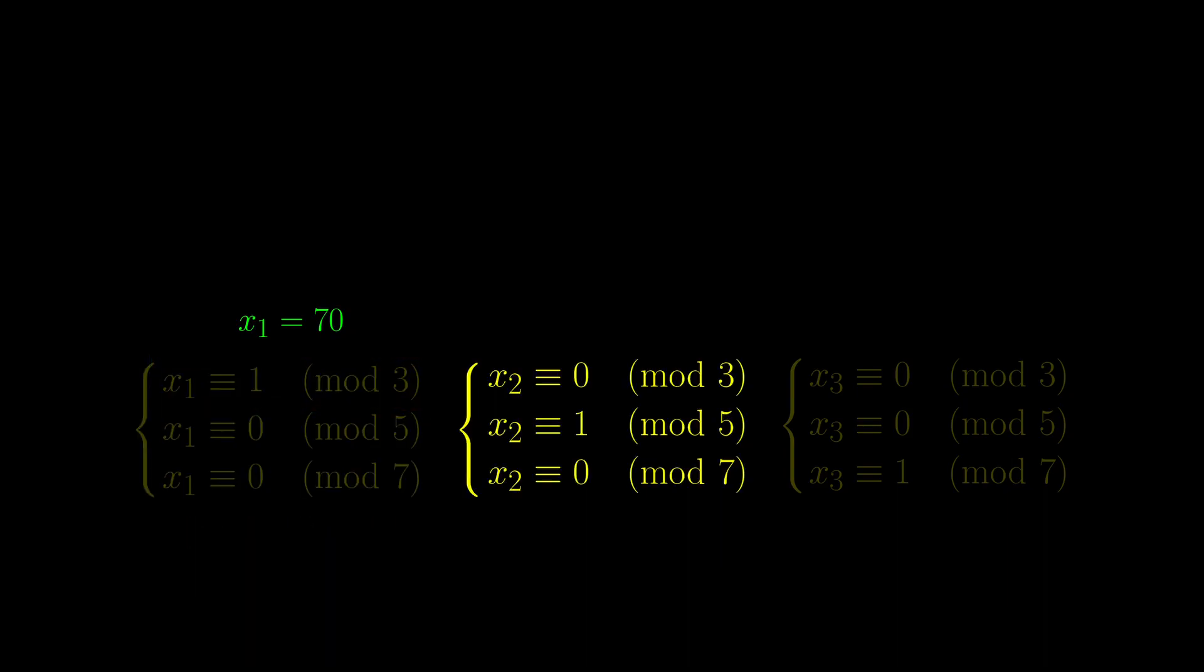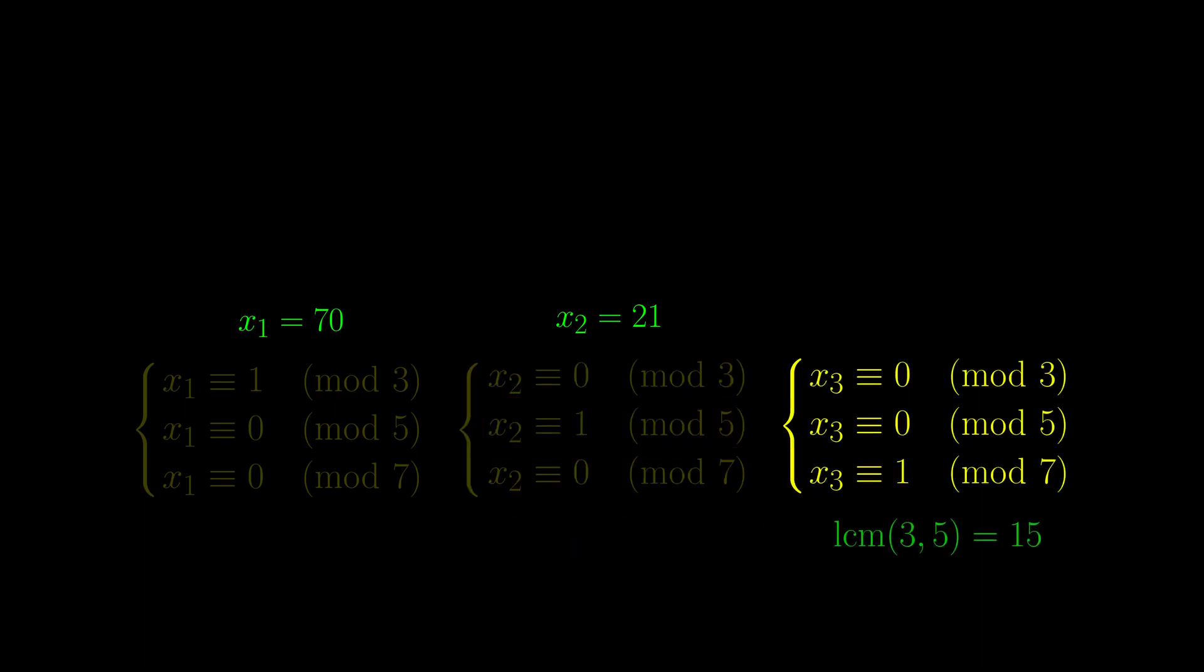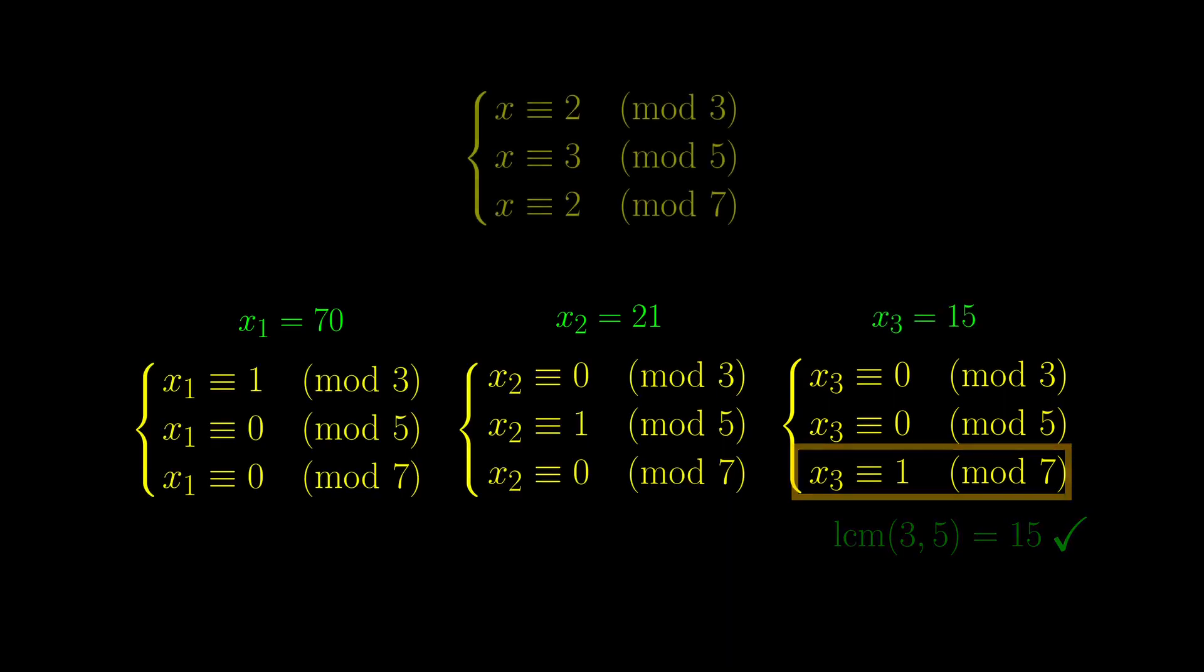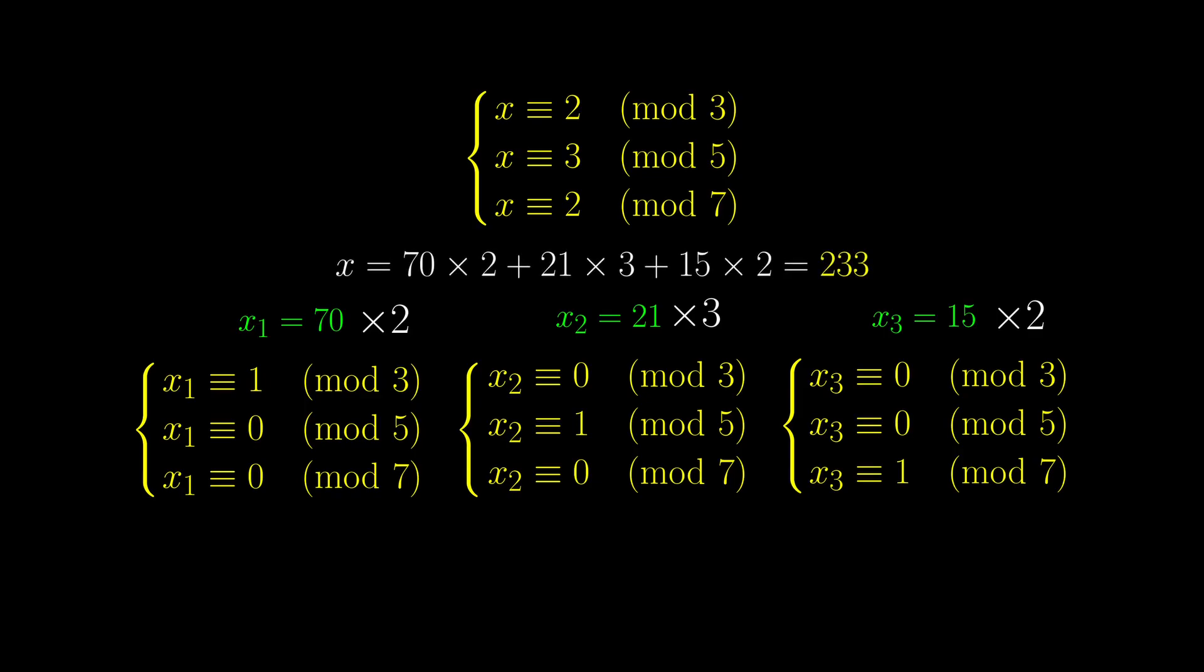What about the second set? x2 has to be congruent to 1 modulo 5 and a multiple of them. 21 fits these criteria, and so we set x2 to be 21. Similarly, for the third set, we set x3 to be 15. So now since the original system of equations has remainders 2, 3, and 2, we multiply x1 by 2, x2 by 3, and x3 by 2, and now we get 233.